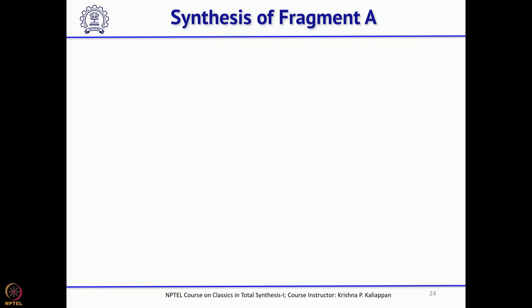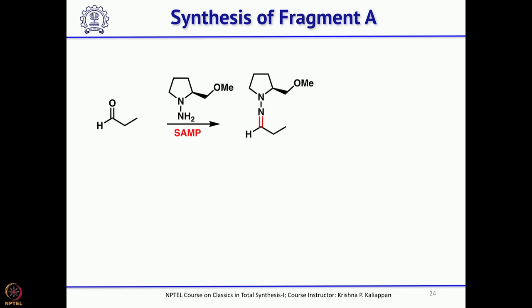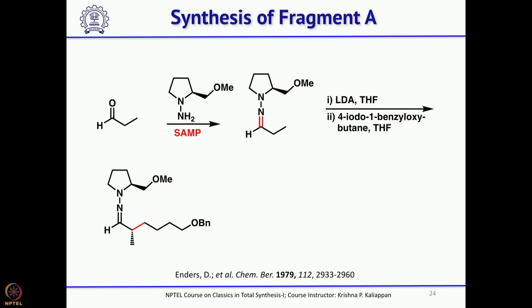For Fragment A, he started with propionaldehyde and used SAMP hydrazine to form the corresponding hydrazone. Alkylation with 4-iodo-1-benzyloxybutane introduced the four-carbon chain. Hydrolysis — normally hydrazones like SAMP are cleaved by ozonolysis — gives the aldehyde, while the hydrazine is recovered on the other side.